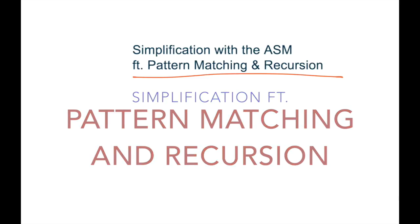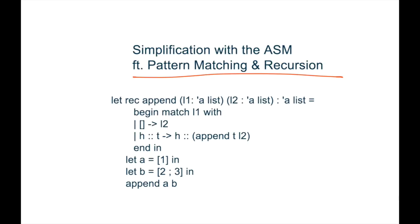So here's the chunk of code that we're going to be simplifying. We have this append function that we are defining, which takes two generic tick A lists and appends them together. And it's a local let,